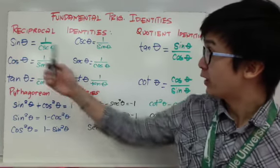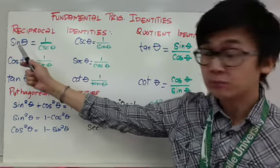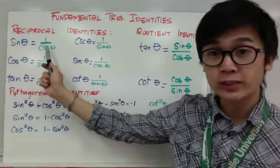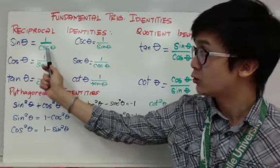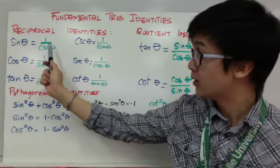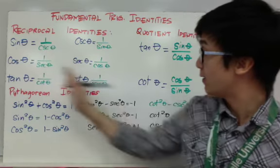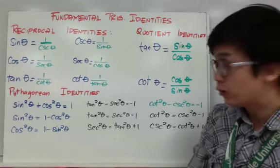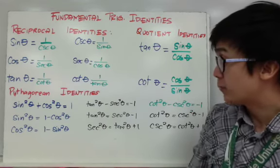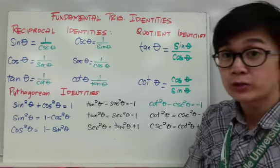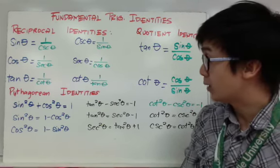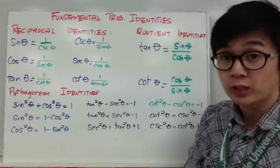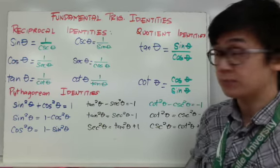We have sine theta, whose trigonometric identity is 1 over cosecant theta. You should copy the rest of these identities in your notes and have them available whenever we are working on problems involving trigonometric equations.